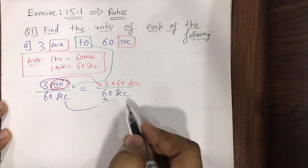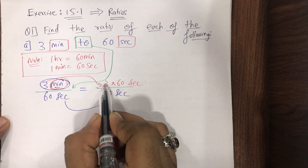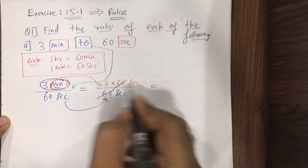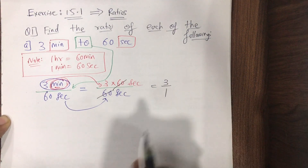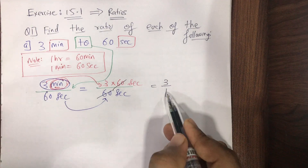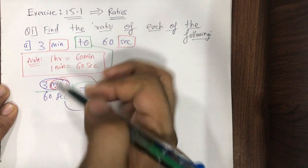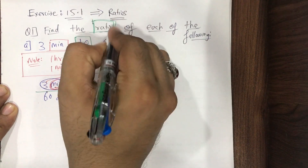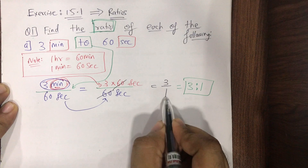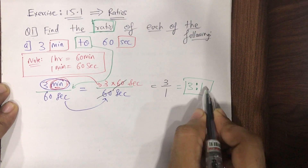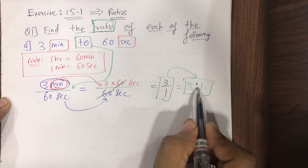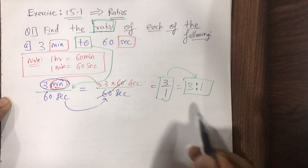Now it's 3 × 60 over 60. Don't multiply out — be smart. The 60 in the numerator and the 60 in the denominator cancel. We are left with 3 upon 1. Don't just write '3' — we need to convert into ratio form. So the answer is 3:1. This is how we pronounce it: 3 is to 1.